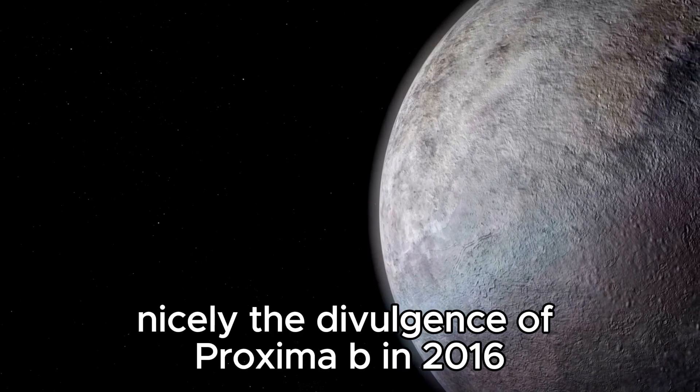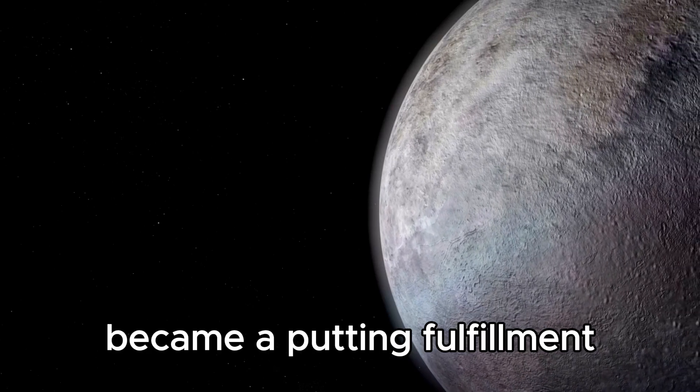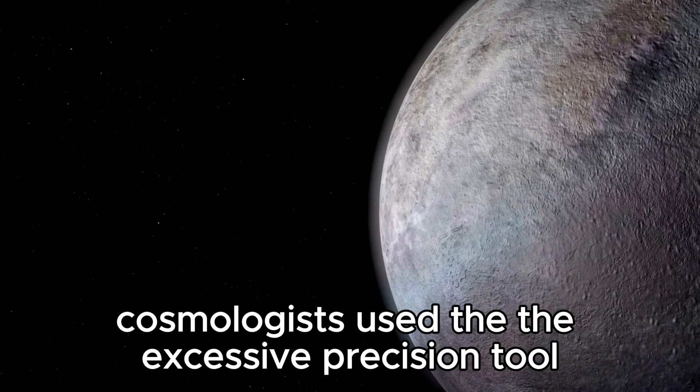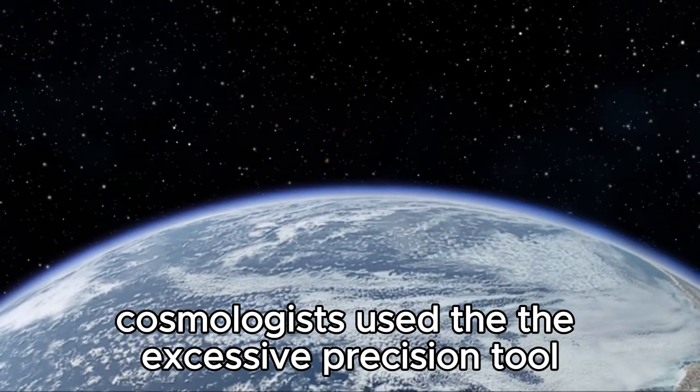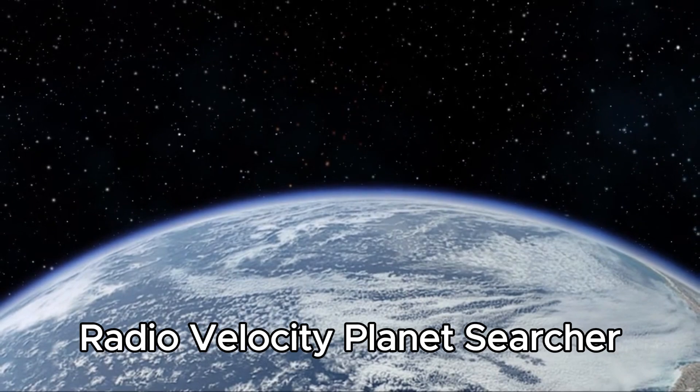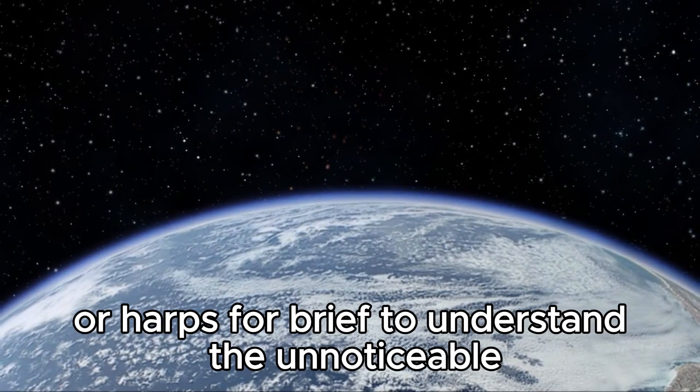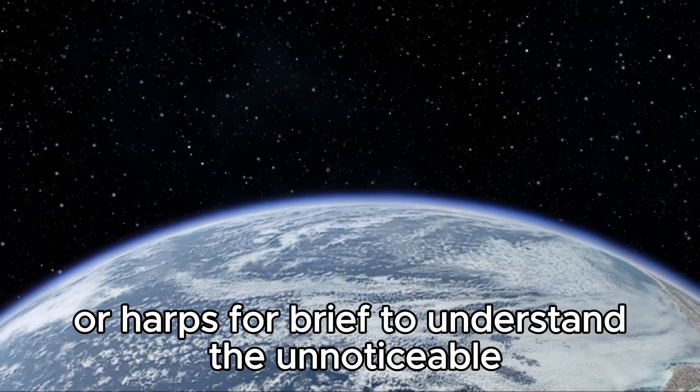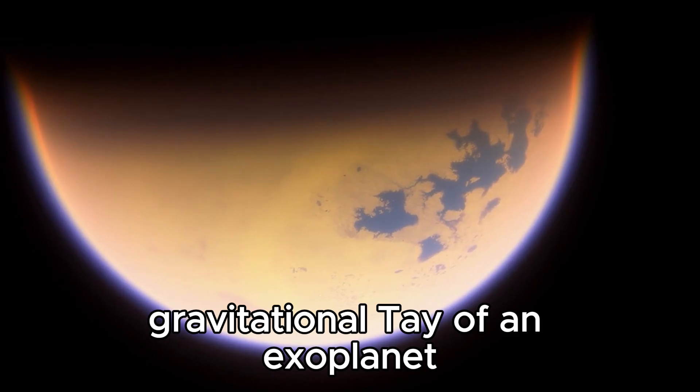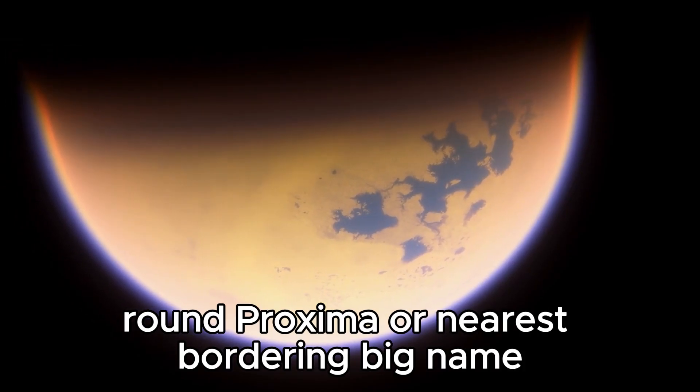Astronomers used the high-precision instrument called the High Accuracy Radial Velocity Planet Searcher, or HARPS for short, to detect the tiny gravitational tug of an exoplanet around Proxima Centauri, our nearest neighboring star.